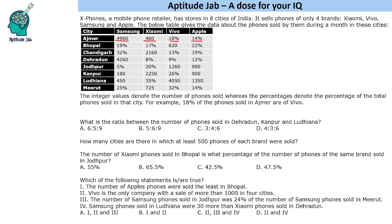Now, how to interpret data from this table: we know that there are only 4 brands, so the total should be 100%. So if we add this percentage — 32% — and add 5440, that is the number of phones sold of these 2 brands. Since this is 32%, the remaining is 68%, so we can get the total number of phones sold. We will calculate values as per the questions.